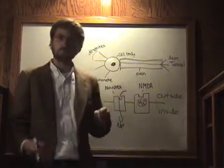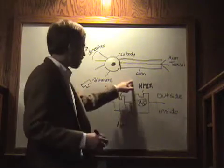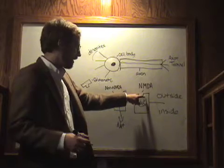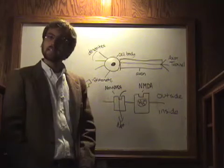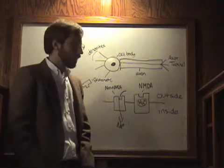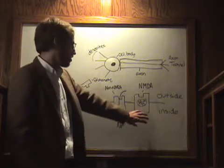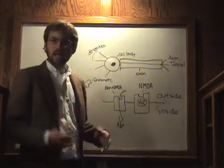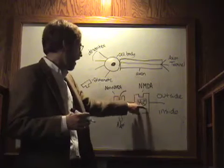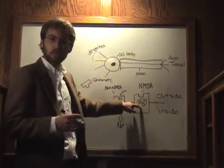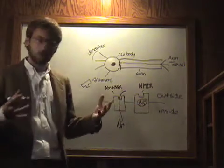So, the glutamate comes over and binds to this NMDA receptor. But that's not enough to open the channel. It also must have a voltage inside the cell that is positive enough to overcome this blockage by the magnesium. So, here's what happens.